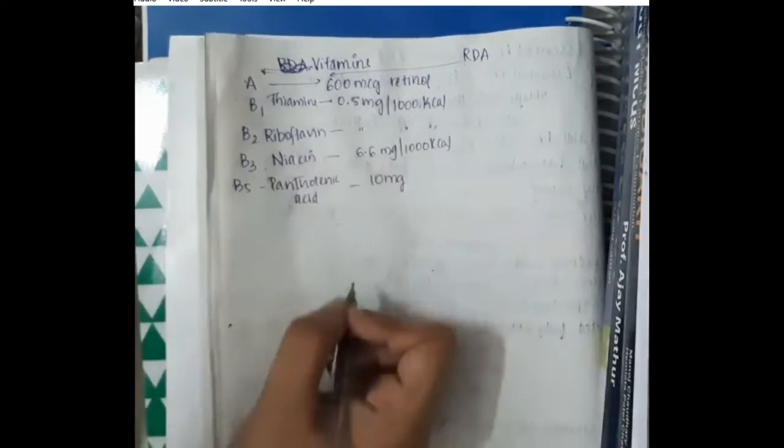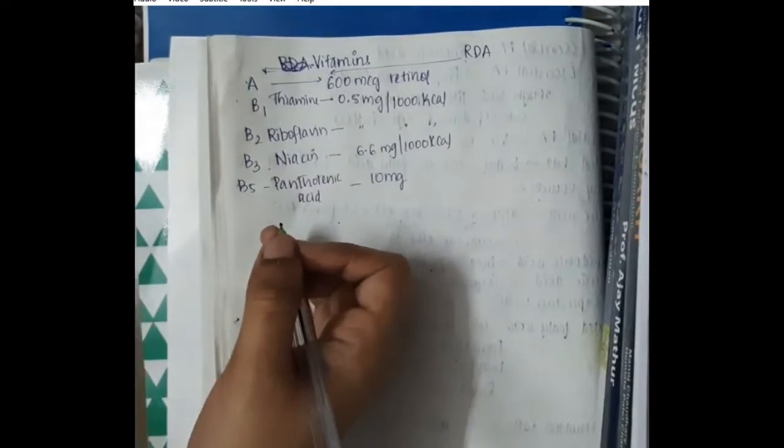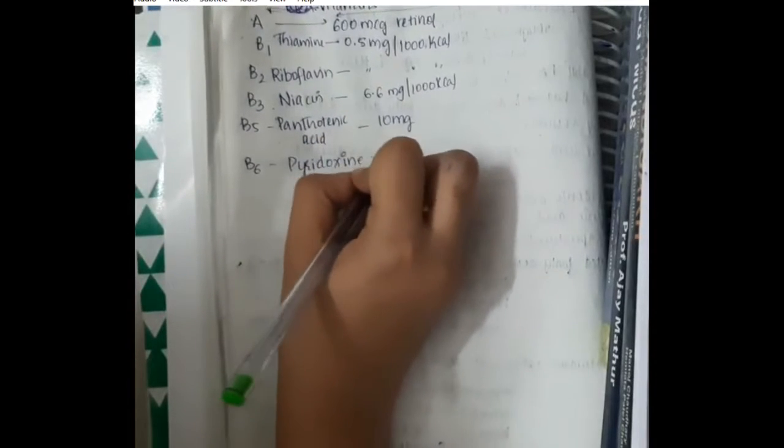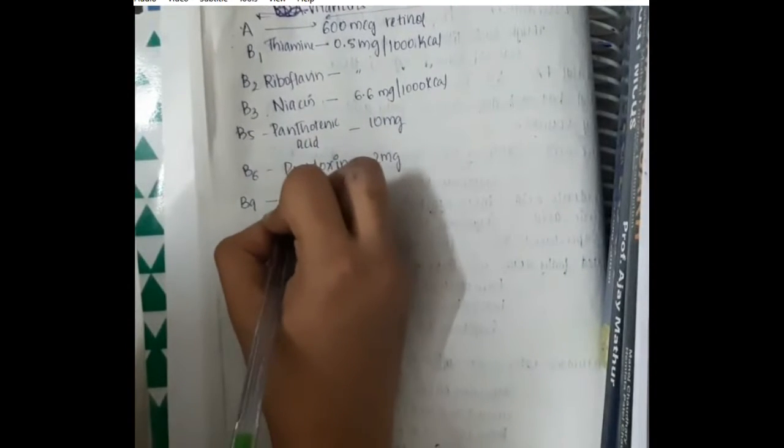Recommended dietary allowance for pantothenic acid is 10 mg. Recommended dietary allowance for pyridoxin is 2 mg.